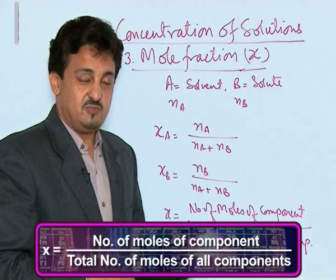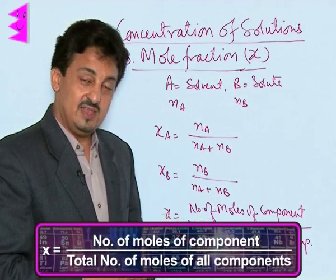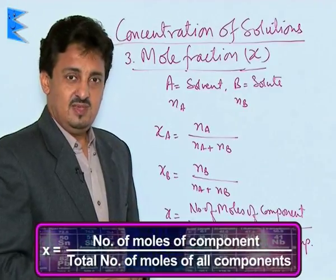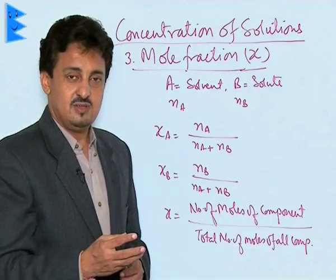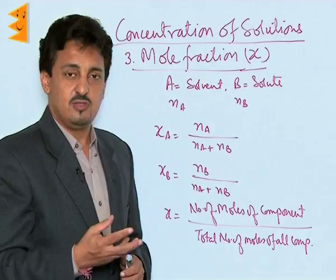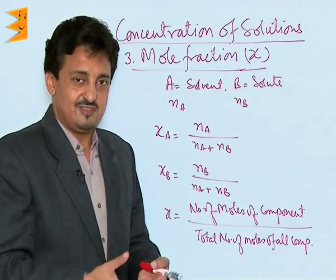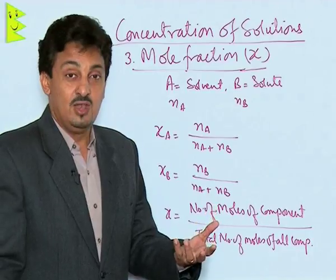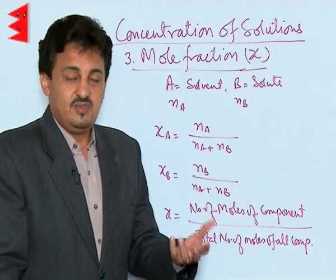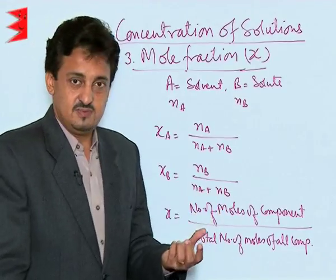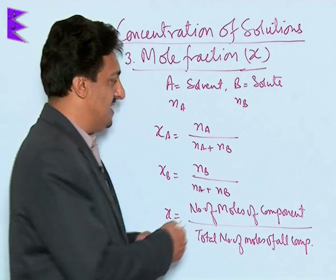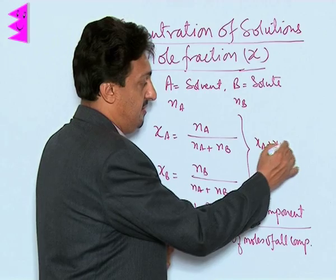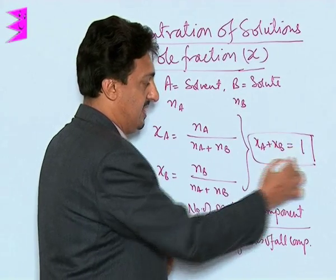That is why it is called a fraction — it is out of one. The main use of this term is that it gives us a comparative account of the number of moles of the two components present in the solution. The best part is that the sum of the mole fractions of both components of the solution is always one (unity).